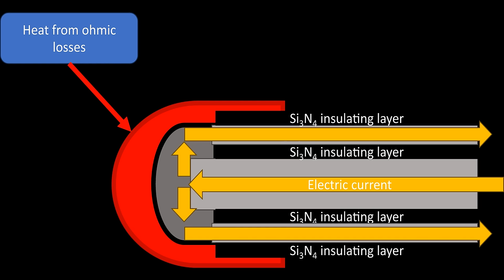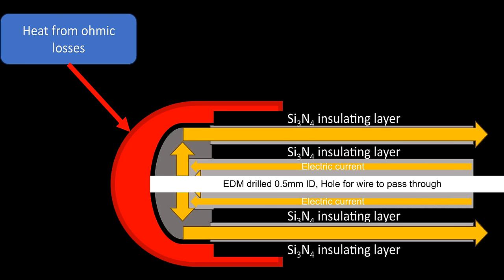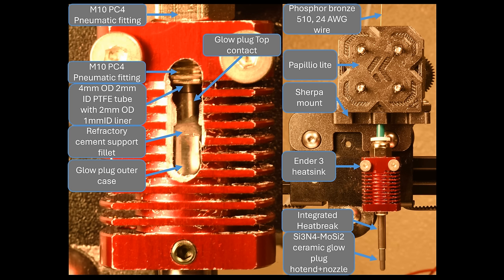Whenever current runs through this heating element, it generates heat from ohmic losses, and exactly at the tip where the resistance is the highest is where most of the heat is generated. This is very desirable because it provides a high heat density source for us to push wire through once we've EDM drilled a hole in the glow plug.